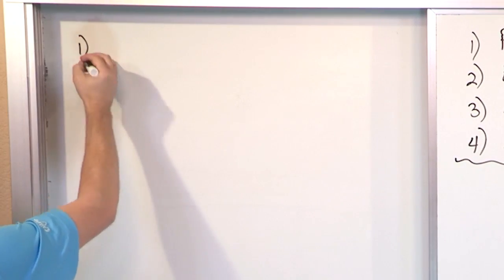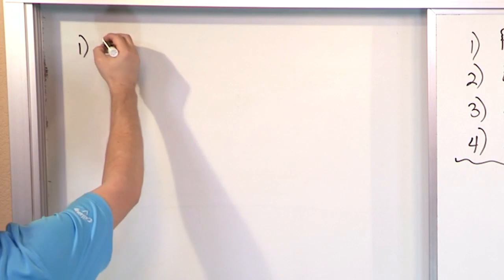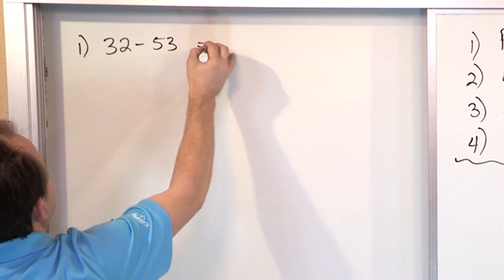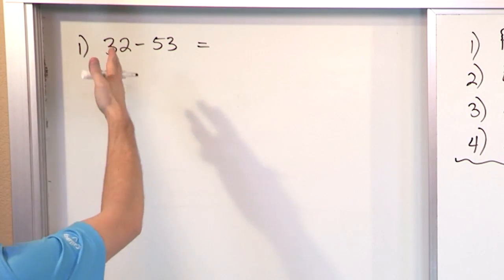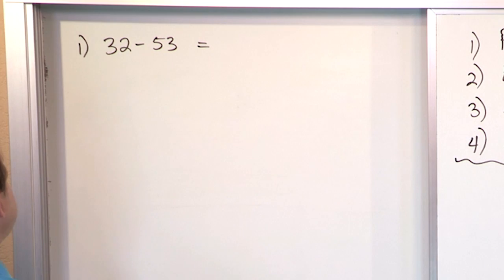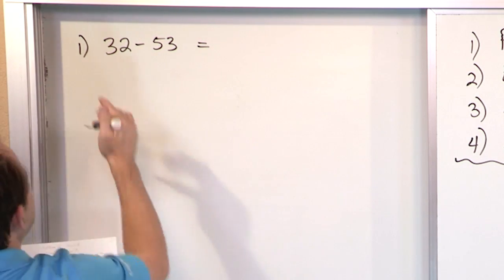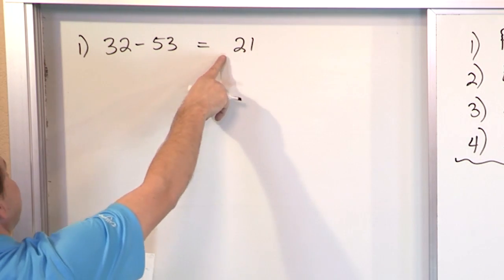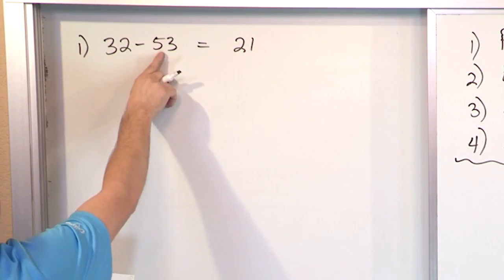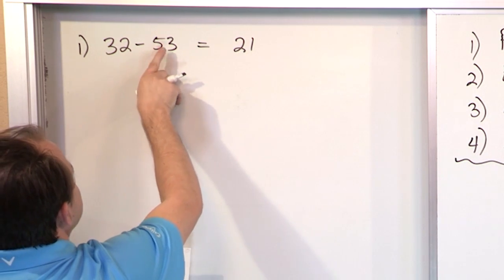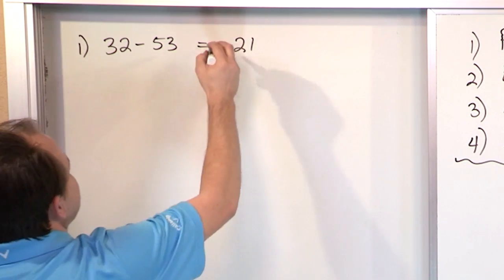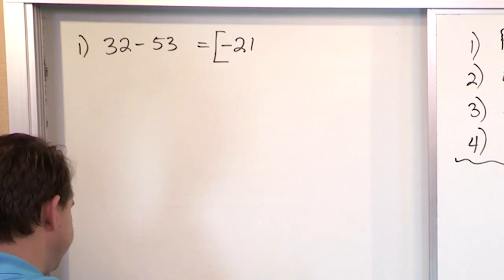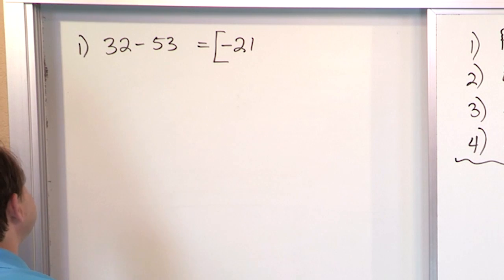Our first problem — simplifying expressions with addition and subtraction: what is 32 minus 53? Remember, minus means plus a negative, so we have mixed signs. All I do is subtract the numbers: 53 minus 32 is 21. The sign of the answer goes with whichever one has the bigger absolute value, which is 53, so the answer is negative 21.